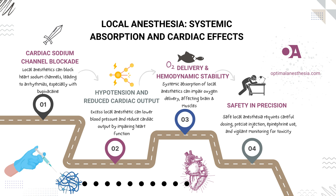Oxygen delivery and hemodynamic stability reflect the bigger picture of maintaining overall patient well-being. Now let's zoom out a bit. When the heart isn't pumping effectively due to the systemic absorption of local anesthetics, oxygen delivery to the tissues can be compromised. The heart is responsible for ensuring that all the cells in your body get the oxygen they need. If its function is impaired, oxygen supply can be reduced, leading to potential problems especially in tissues that are highly dependent on oxygen, like the brain and muscles. While local anesthesia generally has a smaller impact on overall oxygen delivery compared to regional or general anesthesia, it's still something to keep in mind, especially if the patient has pre-existing cardiovascular conditions.